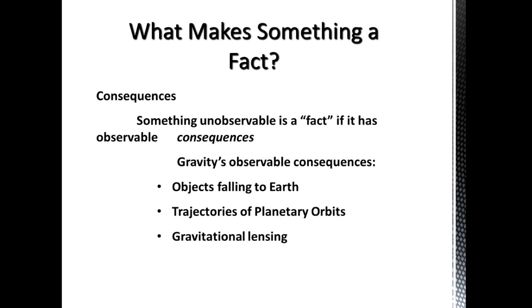Something that is unobservable, we will be willing to accept as a fact if it has observable consequences. Gravity has observable consequences. Gravity was invented as an idea to explain objects falling to Earth, but it came to explain other observable consequences — the trajectories of planetary orbits around the sun, and something that Isaac Newton, who came up with gravity as an idea, never even thought of: gravitational lensing. Gravity can bend light around stars and create distortion effects. That proves, as a consequence, that this unobservable thing called gravity must exist. If it has consequences, an unobservable thing is a fact.